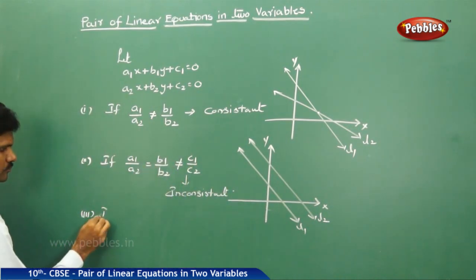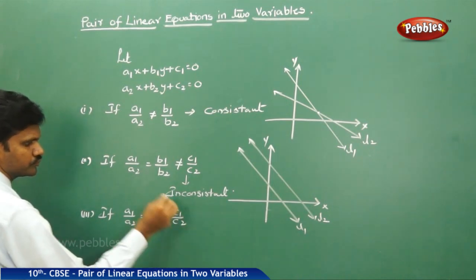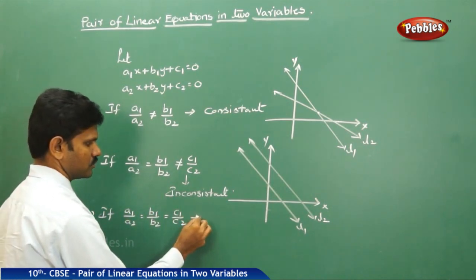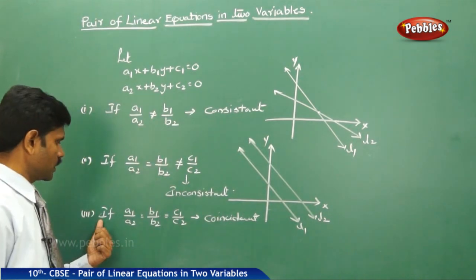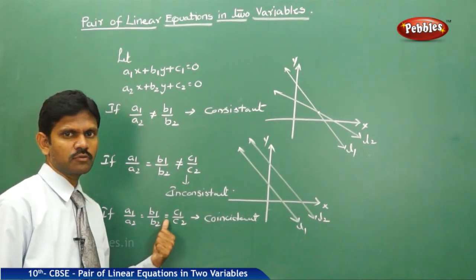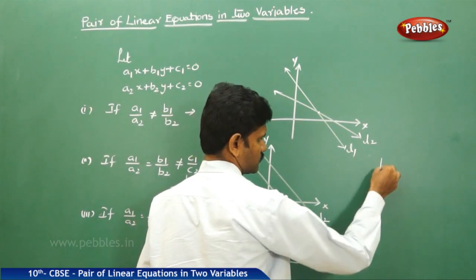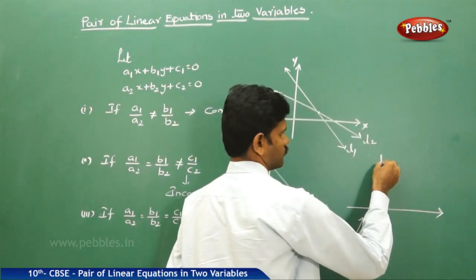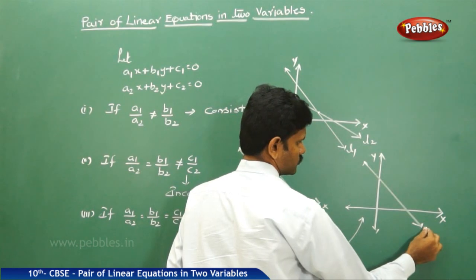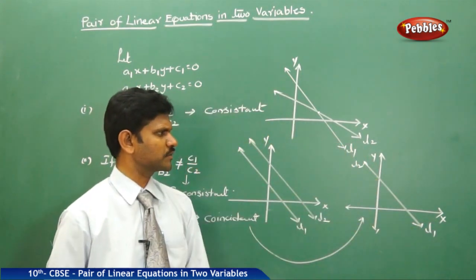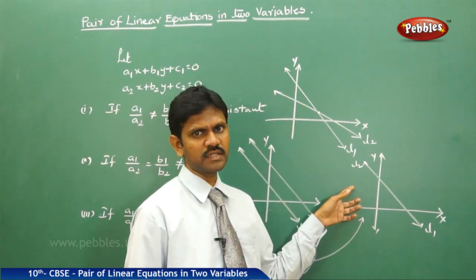Case 3: if A1 by A2 is equal to B1 by B2 is equal to C1 by C2, then the lines are coincident to each other. That is, for the same line, here you name it L1 and here you name it L2 — both lines are coincident to each other.